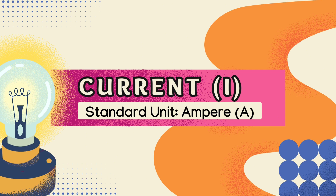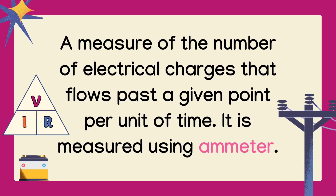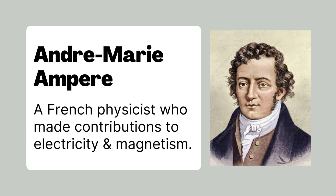Now let's talk about current, symbolized by capital letter I. Its standard unit is ampere. It is a measure of the number of electrical charges that flows past a given point per unit of time. It is measured using the device called ammeter. The unit for current was named after André-Marie Ampere, a French physicist who made contributions to electricity and magnetism.